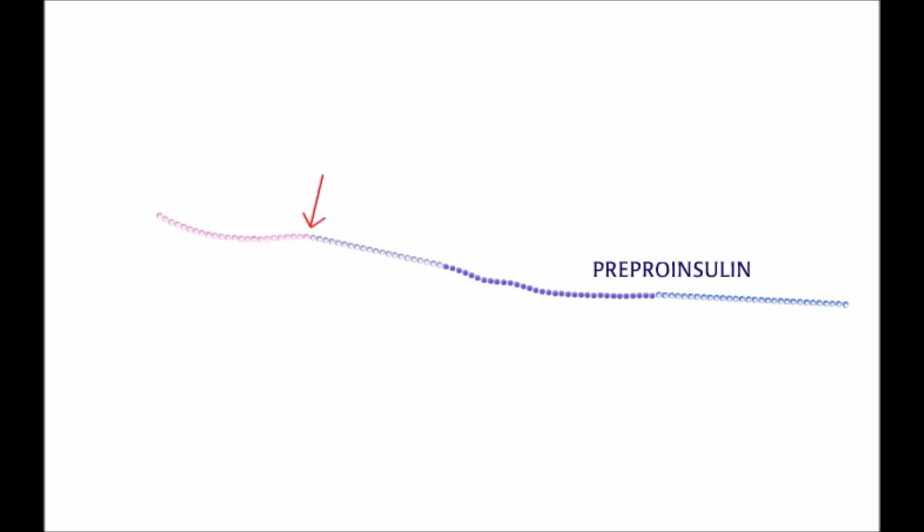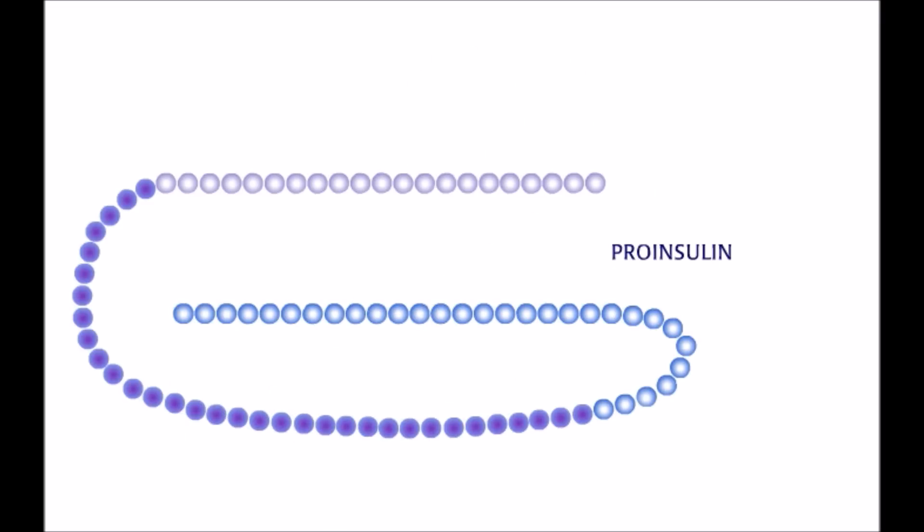First 24 amino acids are signal protein, which leads pre-proinsulin out of the cell. It is cleaved off leaving proinsulin in the pancreas for further processing.